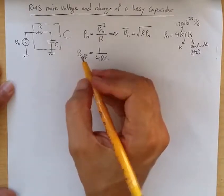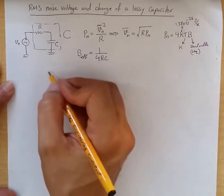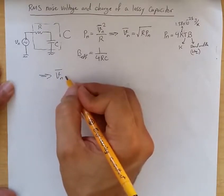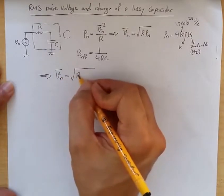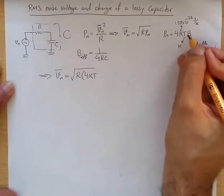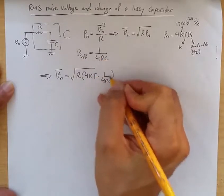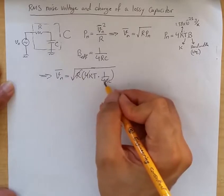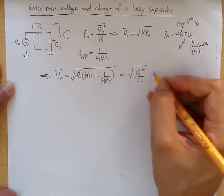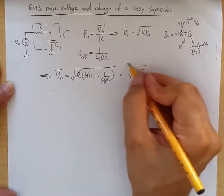Inserting this into this formula and replacing PN with this, we get the RMS value of the noise voltage is square root of R times 4KT, and replacing B with 1 over 4RC. These guys cancel out, so we get square root of KT over C. Again, this is RMS for noise voltage.